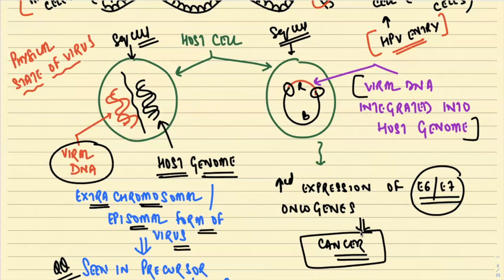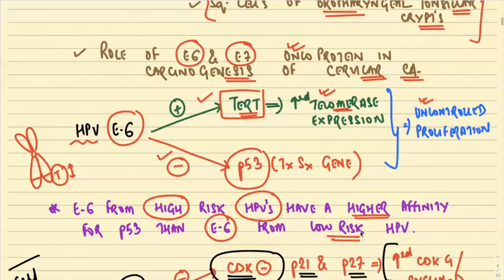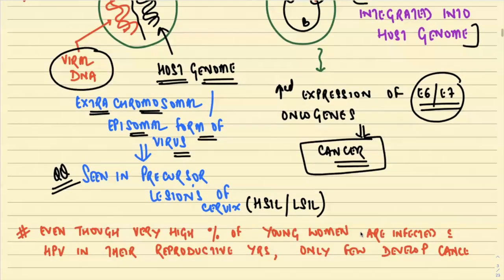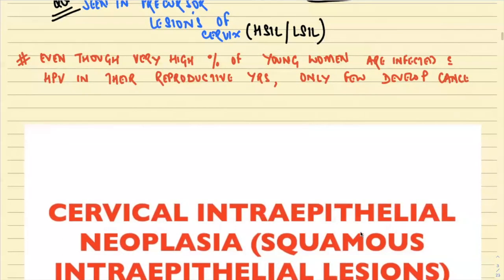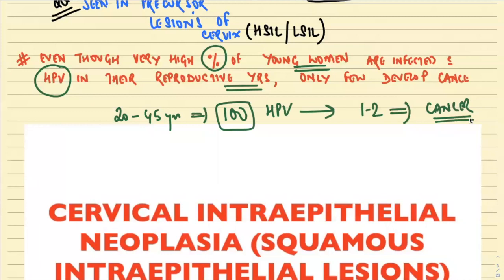Having said all this about HPV infection — even though a very high percentage of young women are infected with HPV in their reproductive years — if 100 women are infected with HPV, only approximately one to two are going to develop cancer. Very few of those infected will finally go on to develop cervical carcinoma.